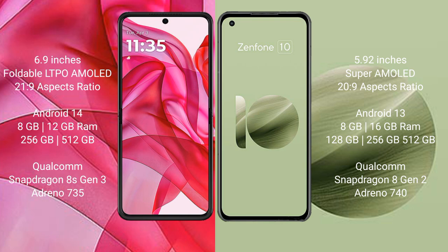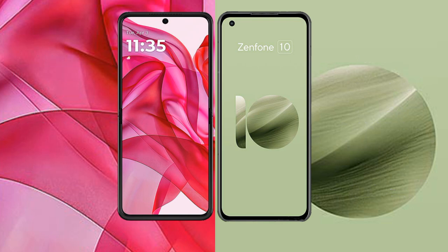Motorola Razr 50 Ultra comes with 8GB or 12GB RAM and 256GB or 512GB internal storage, Qualcomm Snapdragon 8 Gen 2 processor, and GPU Antino 735. Asus Zenfone 10 comes with 8GB or 16GB RAM and 128GB, 256GB, or 512GB internal storage, Qualcomm Snapdragon 8 Gen 2 processor, and GPU Antino 740.